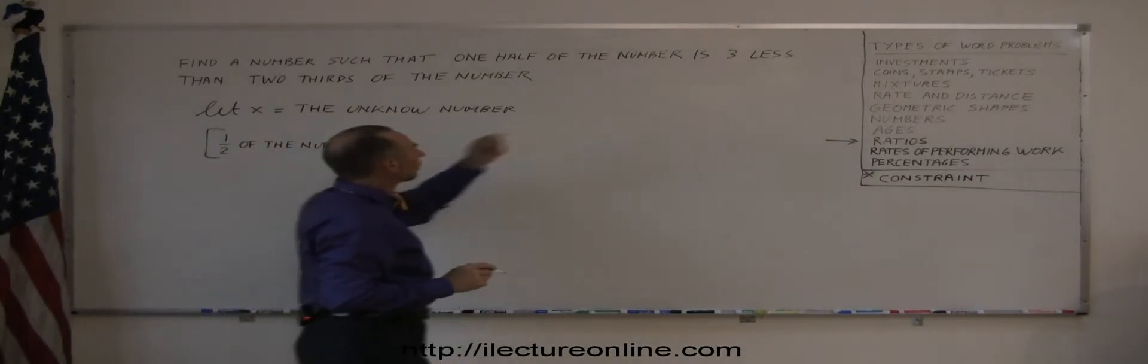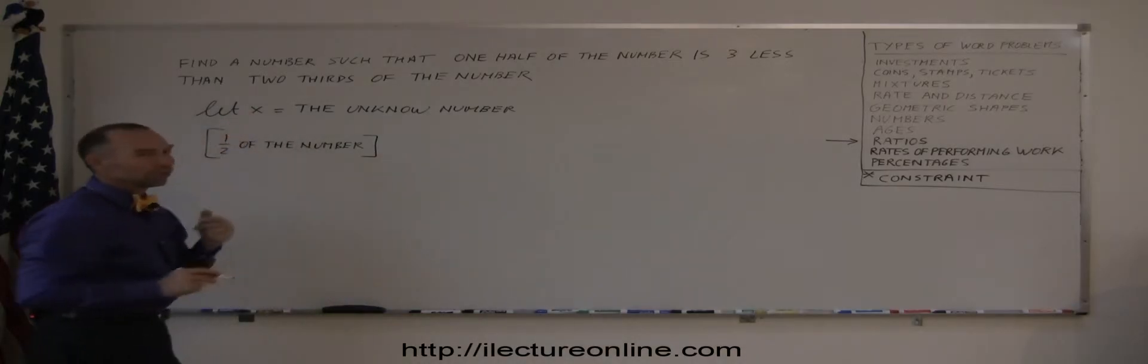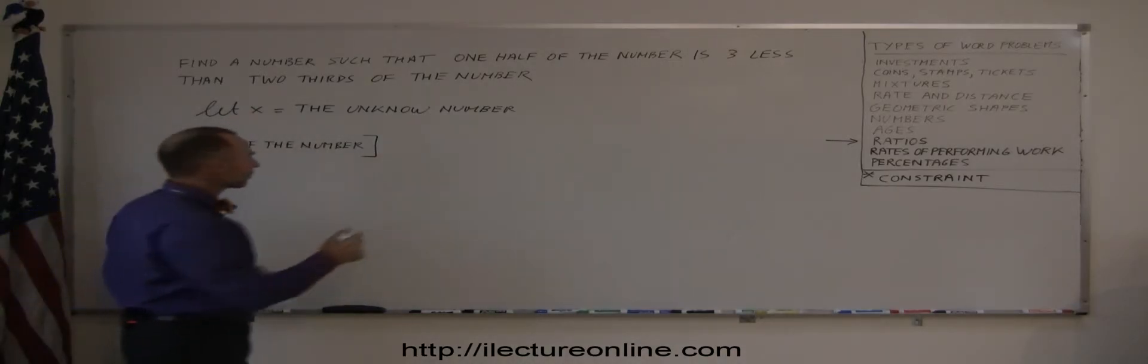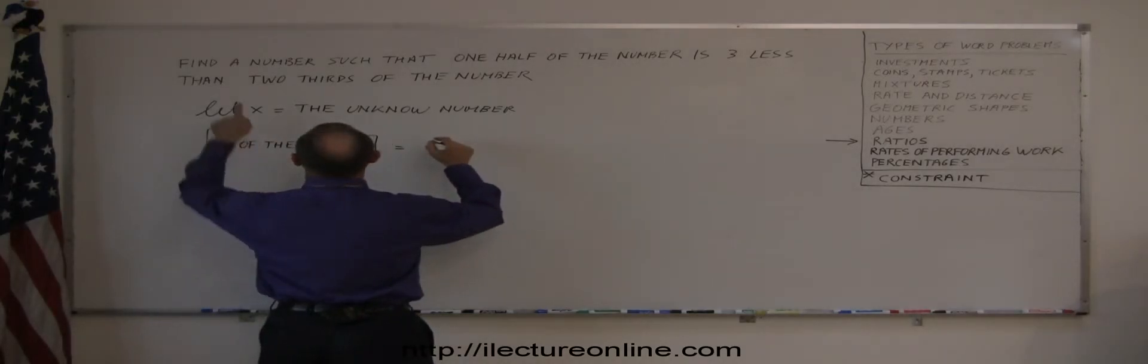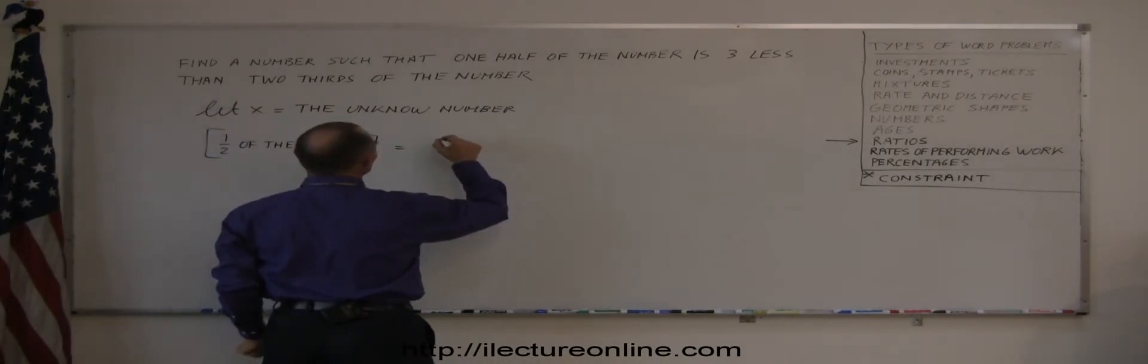is three less than two-thirds of the same number. So three less, that means I'm going to subtract three from something, so it's equal to two-thirds of the number minus three.